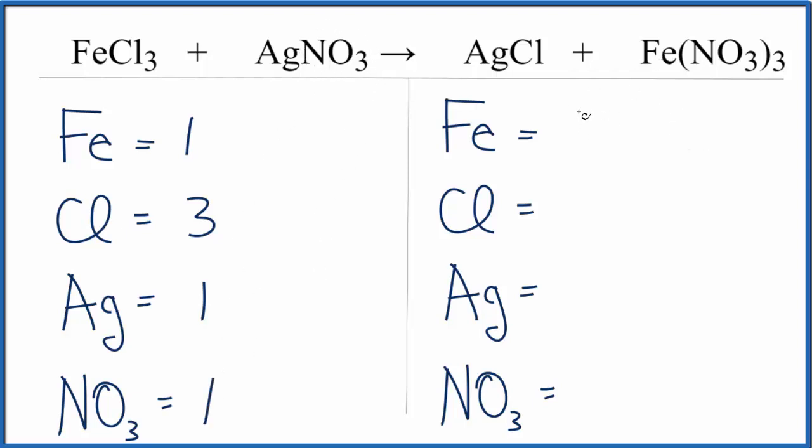On the product side I have one iron, one chlorine, one silver, and then three of these nitrate ions, NO3. So I have three of those right there. That way I don't have to have a bunch of oxygens and nitrogens, it's just three NO3s. It makes it a lot easier.